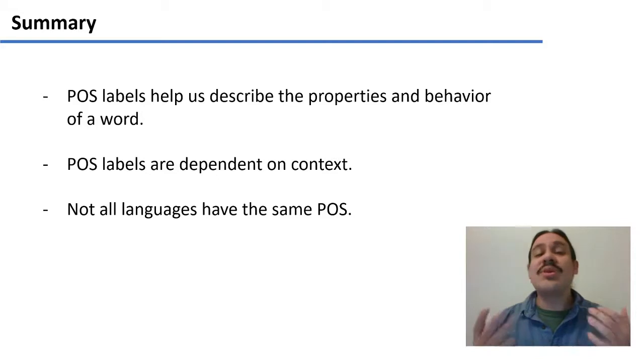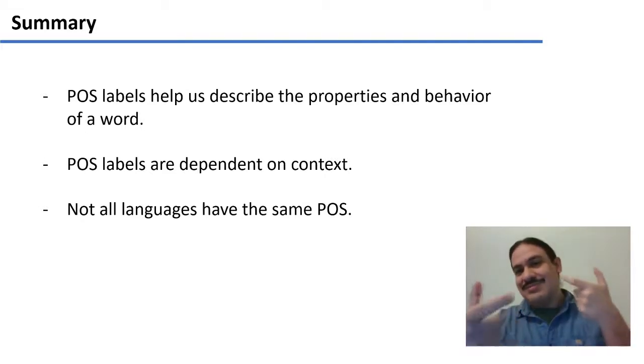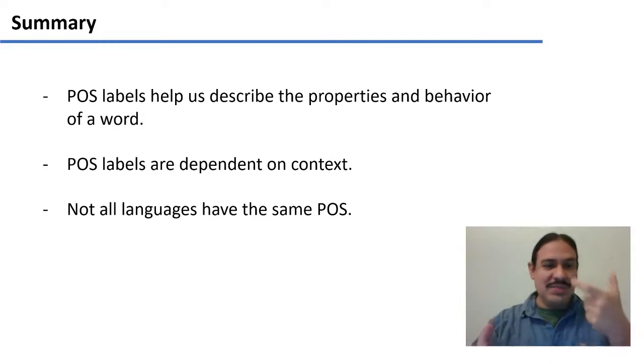It's also going to help us in natural language processing because if you ask Siri, Siri play some music, Siri needs to know that play is an action and that music is what you want the action performed on. You want to play music, you want to do an action. So this kind of labeling is going to be very useful for us in natural language processing.